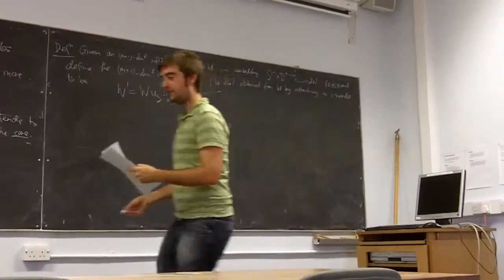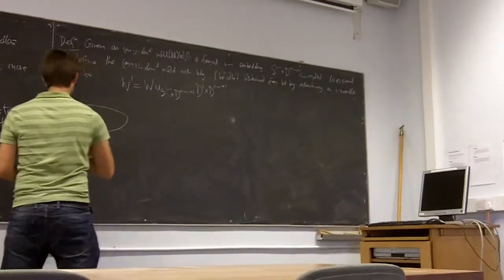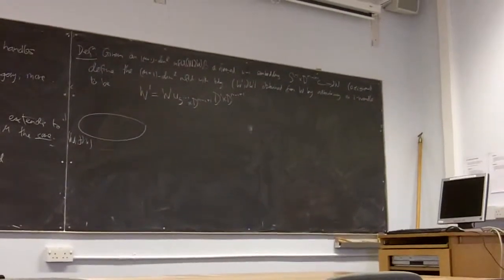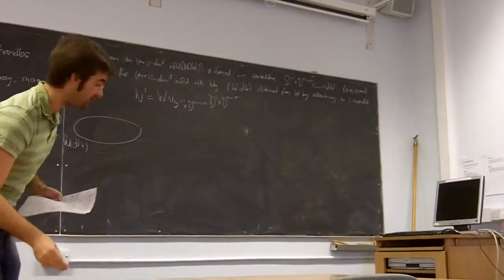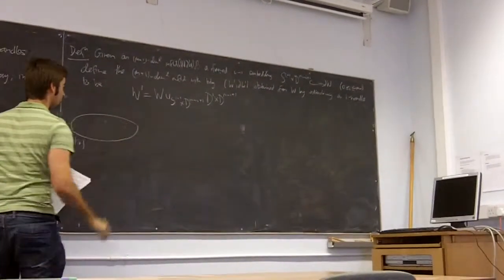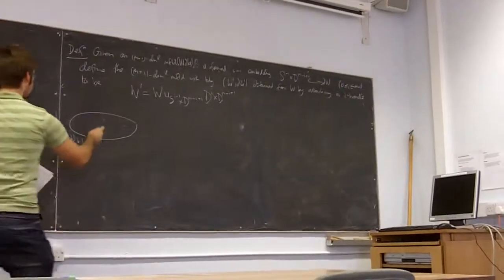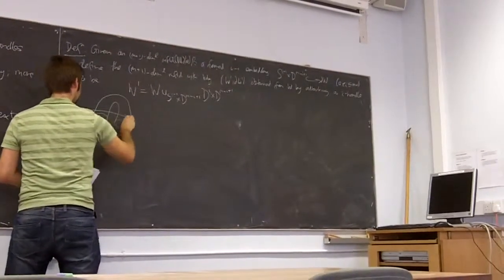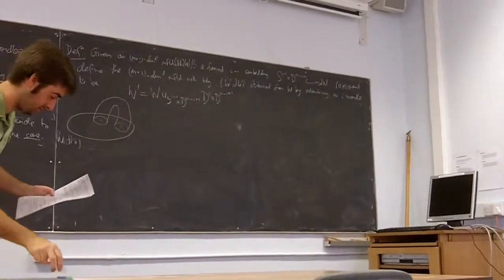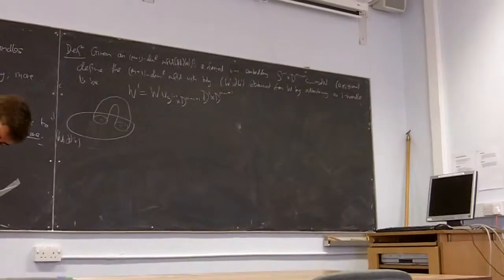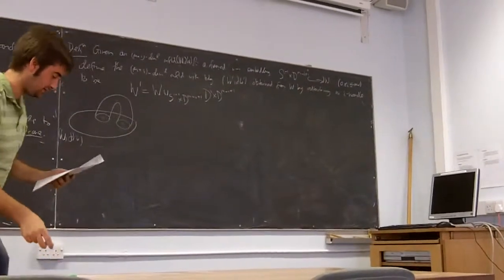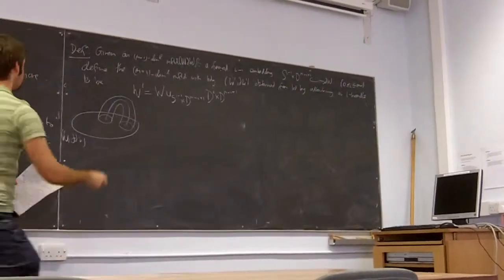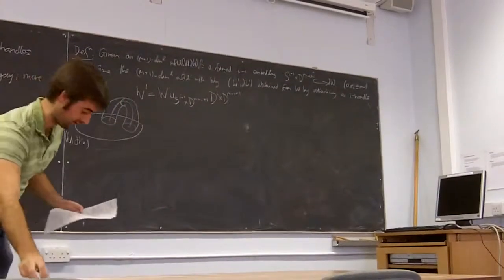What this looks like: we have some manifold with boundary, W. Then we have some framed embedding — in this case, f₀. I use red for the attachment sphere. We get something that looks a bit like this. I'm going to use blue for the core of the handle and green for what I call the belt sphere.